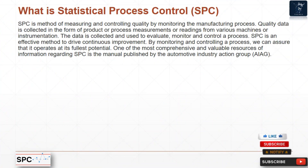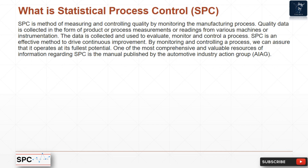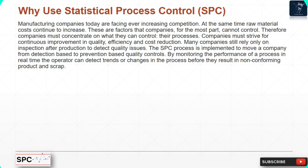What is Statistical Process Control (SPC)? SPC is a method of measuring and controlling quality by monitoring the manufacturing process. Quality data is collected in the form of product or process measurements or readings from various machines or instrumentation. The data is collected and used to evaluate, monitor, and control a process. SPC is an effective method to drive continuous improvement. One of the most comprehensive resources on SPC is the manual published by the Automotive Industry Action Group (AIAG).